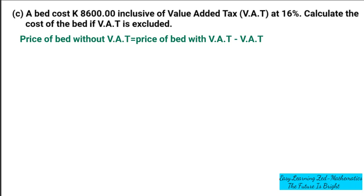We're going to write the price of bed. We are told that the price of bed with VAT is 8,600 kwacha. The actual VAT amount is not given, but the percentage is given, so we need to find the actual amount using the percentage. We're going to calculate the VAT using the price with VAT: minus 8,600 kwacha multiplied by 16 over 100.